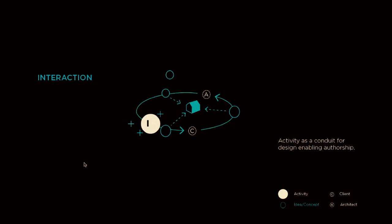The last is interaction — the activity as a conduit for design enabling authorship. Authorship is critical in that every single project you have someone do is custom. A house is custom no matter who makes it. But it's not always your own. How do we have a process in which you become the author of your space?